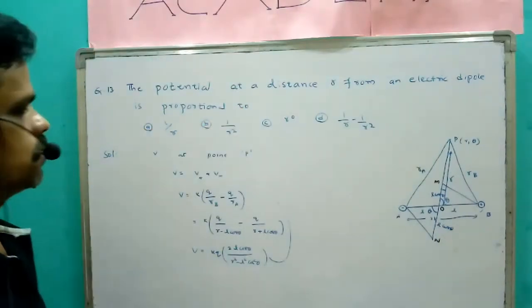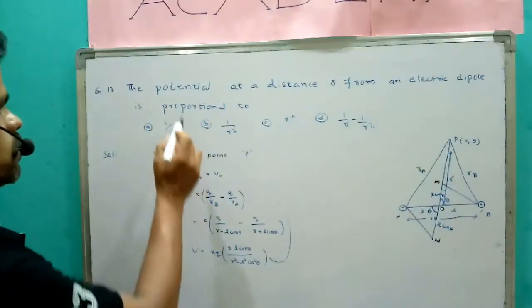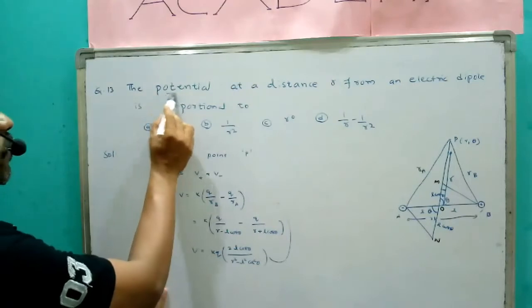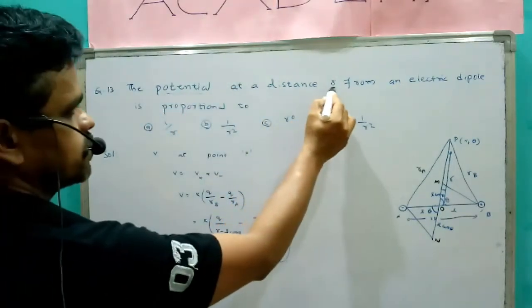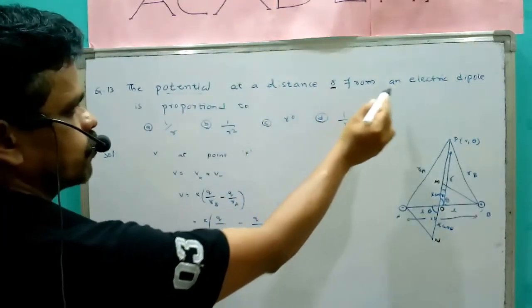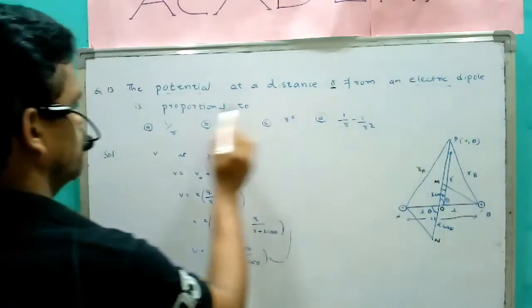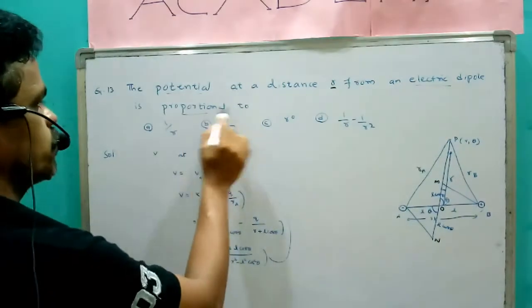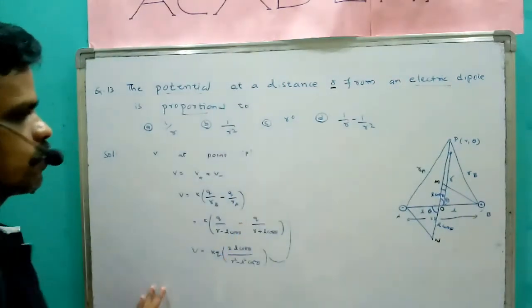In this question, he asked the potential at a distance R from an electric dipole — that is proportional to what? We have four options.